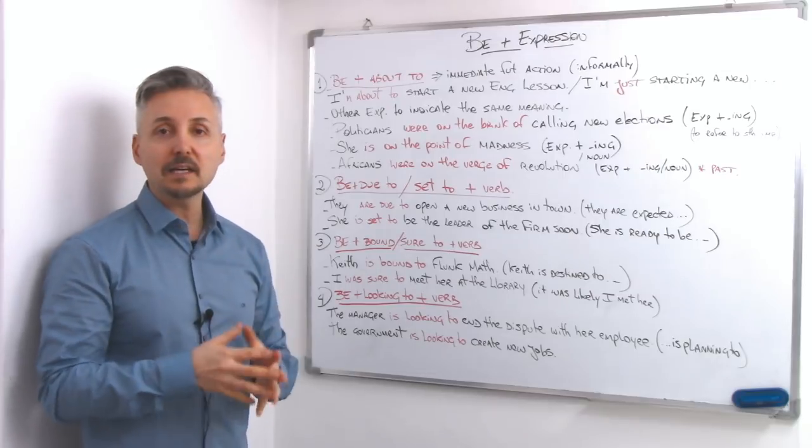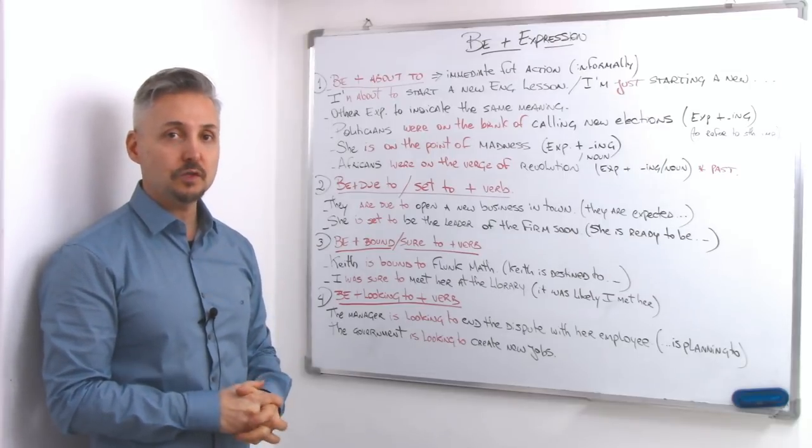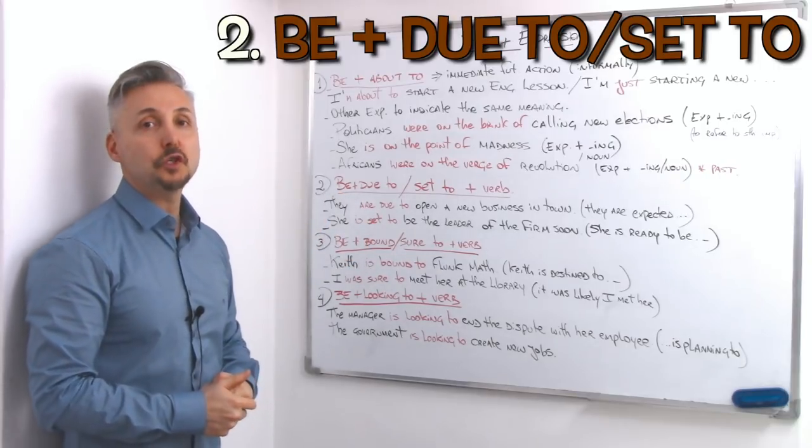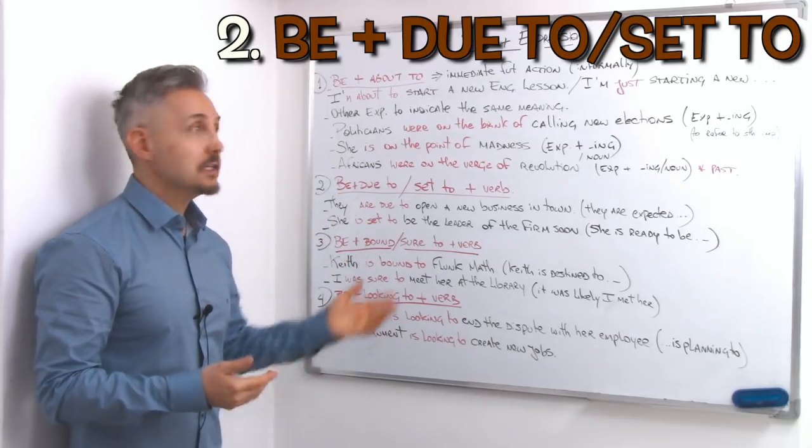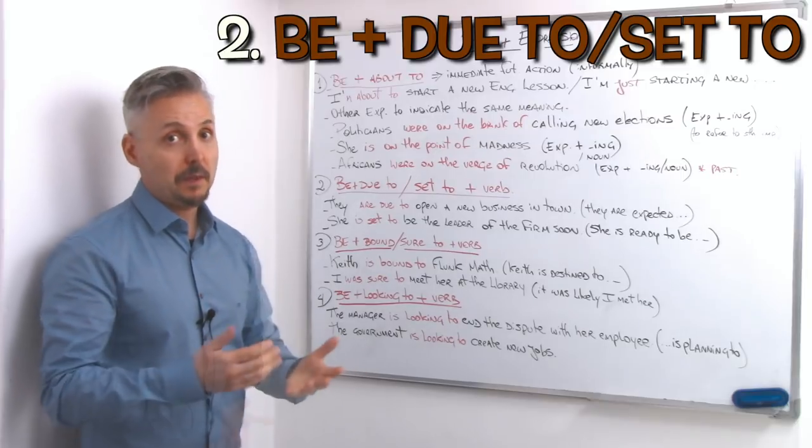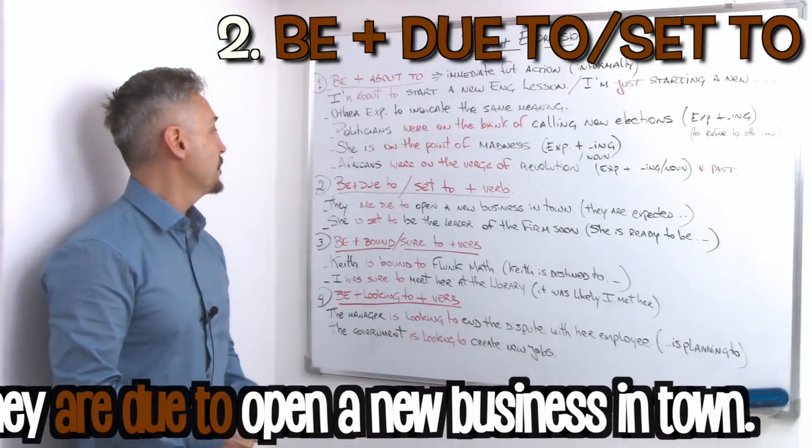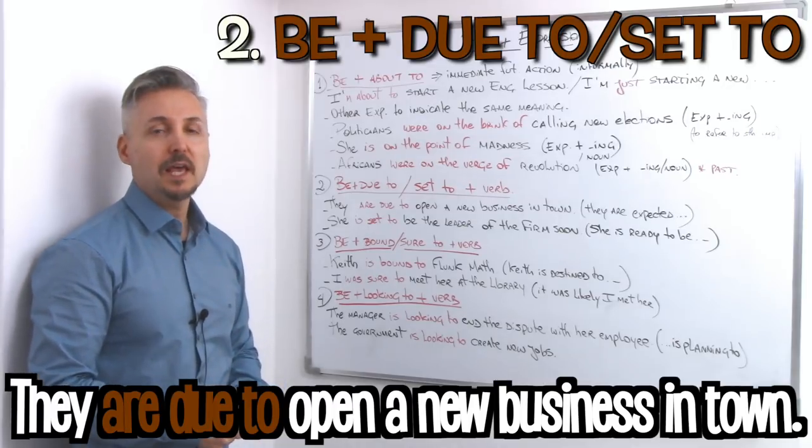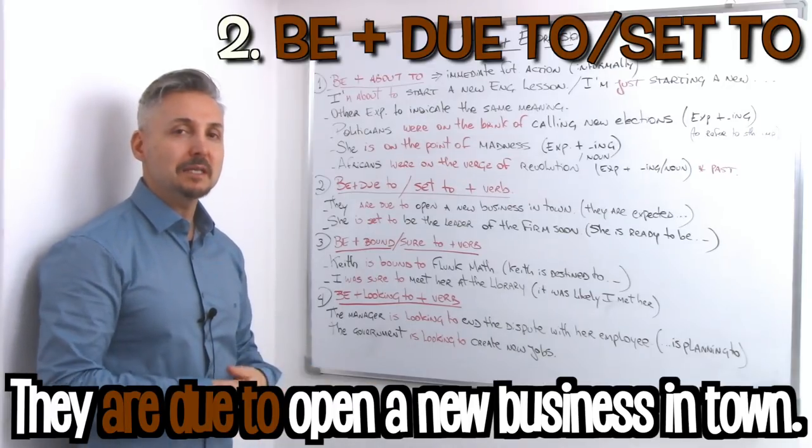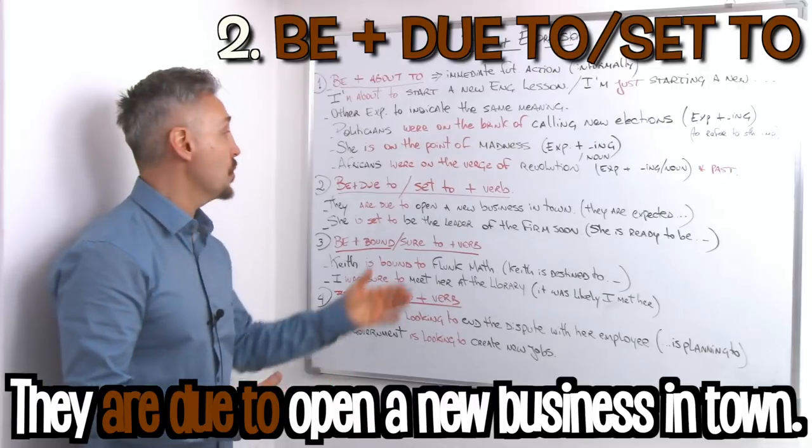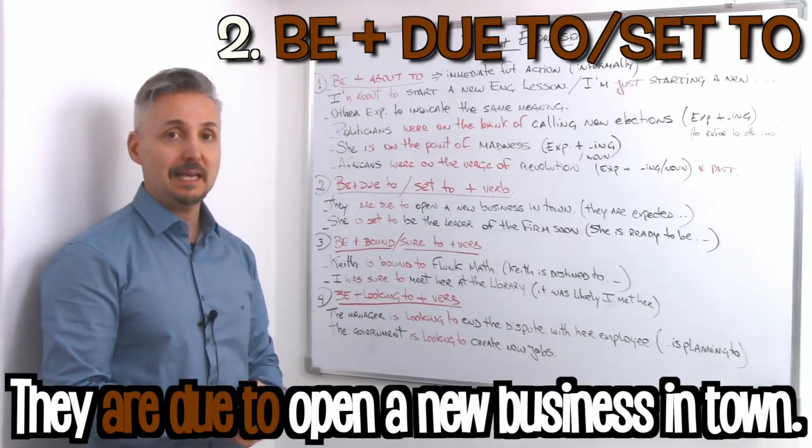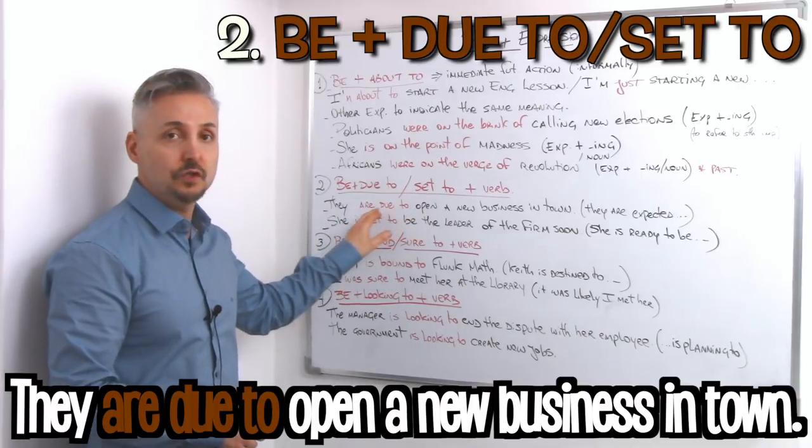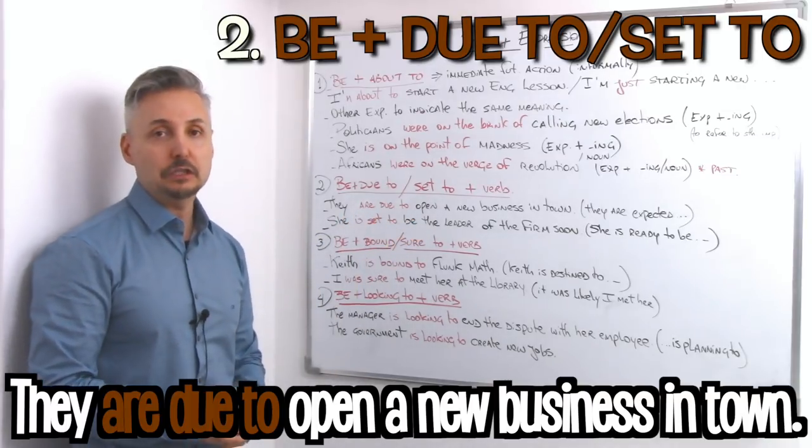So we have the second expression that I chose to talk about in this lesson, be plus due to or set to plus verb. So let's take a look at the example. They are due to open a new business in town. This means they are expected to open a new business in town. So they are due to, they are expected to.